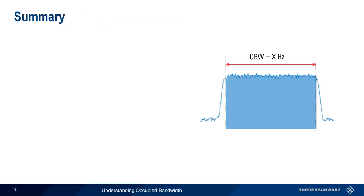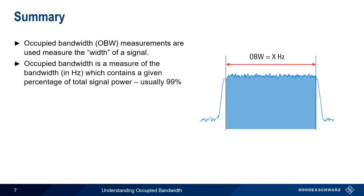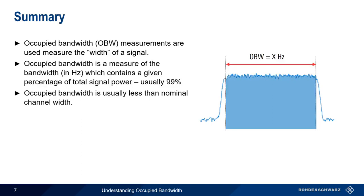Let's summarize what we've learned. Occupied bandwidth measurements are a defined, repeatable way to measure the width of a signal. Occupied bandwidth is defined as the frequency span in Hz which contains a given percentage of the total signal power, usually 99%. And under most circumstances, occupied bandwidth is less than the nominal channel width. This concludes our short presentation, Understanding Occupied Bandwidth. Thanks for watching.